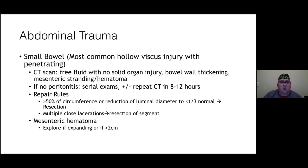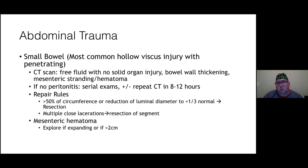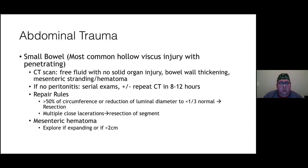Moving to the abdomen: small bowel is the most common hollow viscus injured. CT findings include free fluid with no solid organ injury, bowel wall thickening, and mesenteric stranding. Without peritonitis, do serial abdominal exams with repeat CT in 8–12 hours. With peritonitis, go straight to the OR. If injury is greater than 50% after debridement of non-viable edges, perform resection. Multiple enterotomies in a row allow for a large segment resection. Mesenteric hematomas can be explored if expanding or greater than 2 cm.